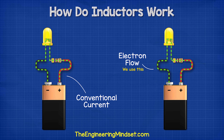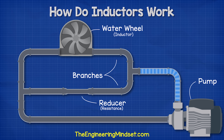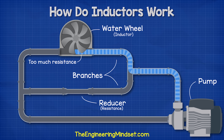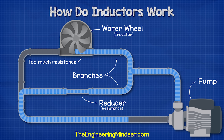As the water flows it reaches the branches and has to decide which path to take. The water pushes against the wheel but the wheel is going to take some time to get moving, so it's adding a lot of resistance to the pipe, making it too difficult for the water to flow through this path. Therefore the water will instead take the path of the reducer, because it can flow straight through this and get back to the pump much easier.